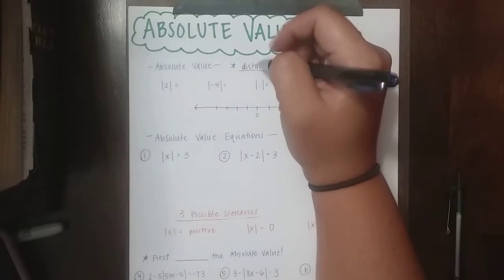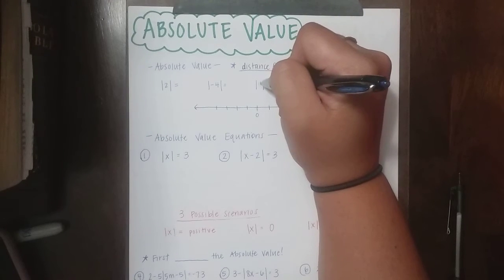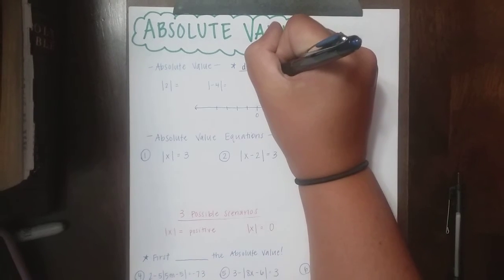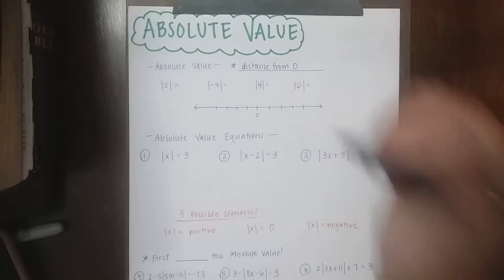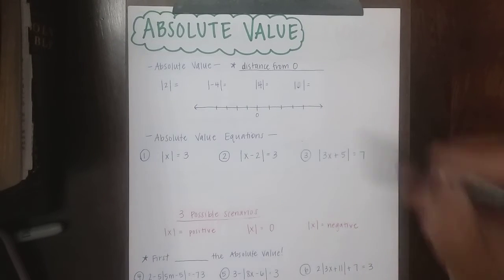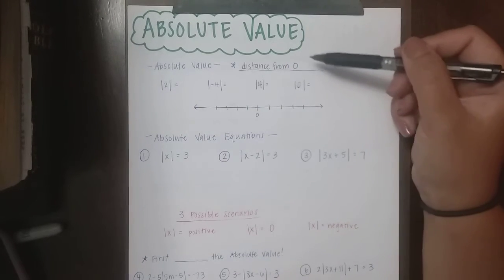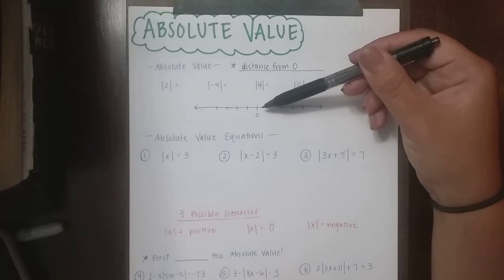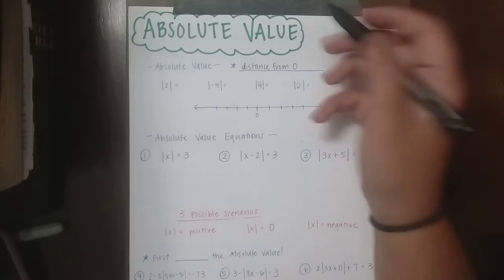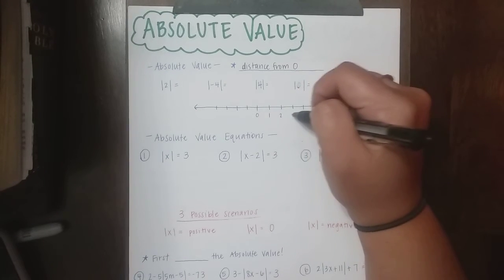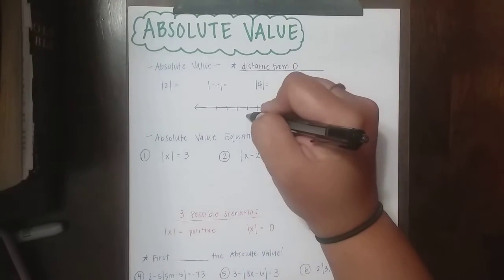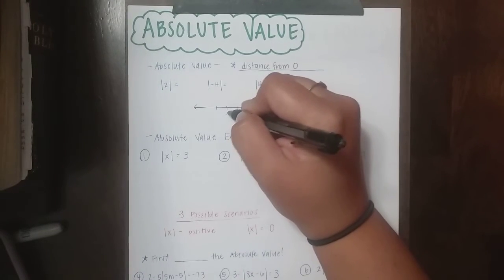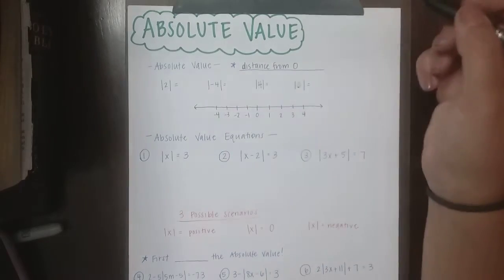I forgot to put my numbers in here. This one was supposed to be a 4, and this one is a 0. So we're talking about distance from zero — you can think about a number line. On this side we keep getting bigger and bigger, and on the left we have our negatives, and we keep getting smaller and smaller.